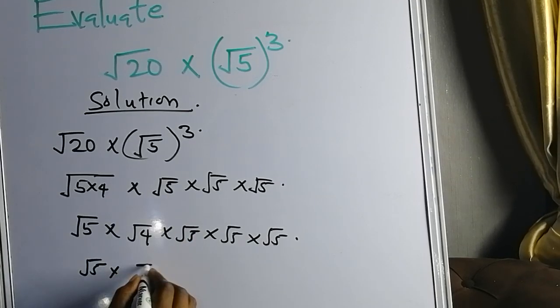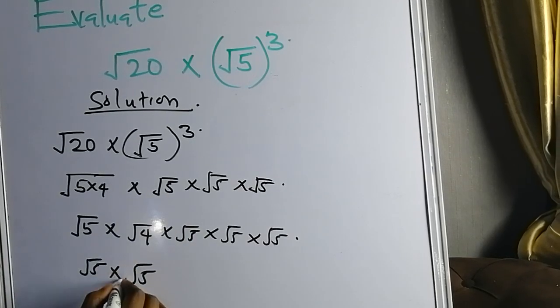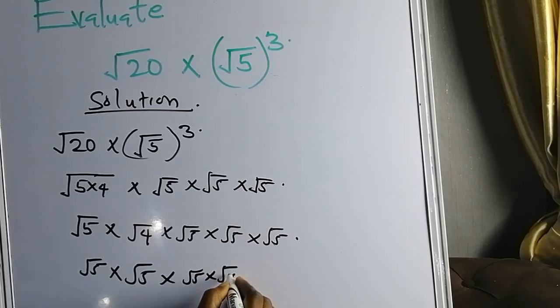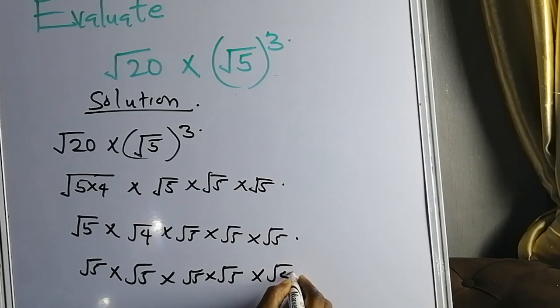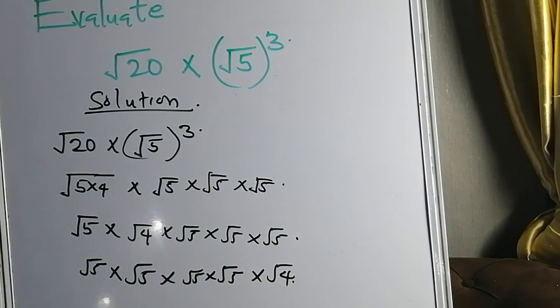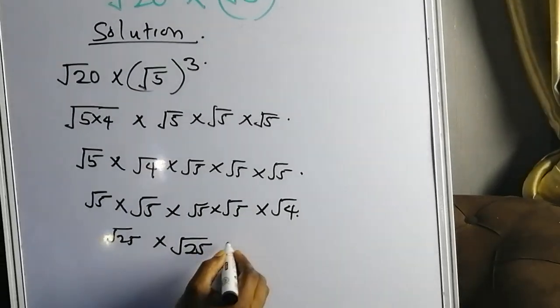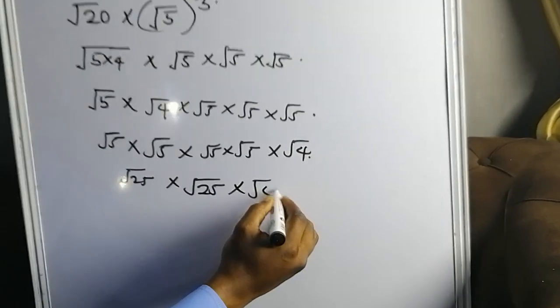Let me do it like this: √5—I'm bringing this 5 to this position. √5 times √5, it's the same thing; you can move it around. So you have another two 5s here: √5 times √5, then times √4. I'm just rearranging them. 5 times 5 is √25 times √5, then 5 times 5 is also √25, then √4.